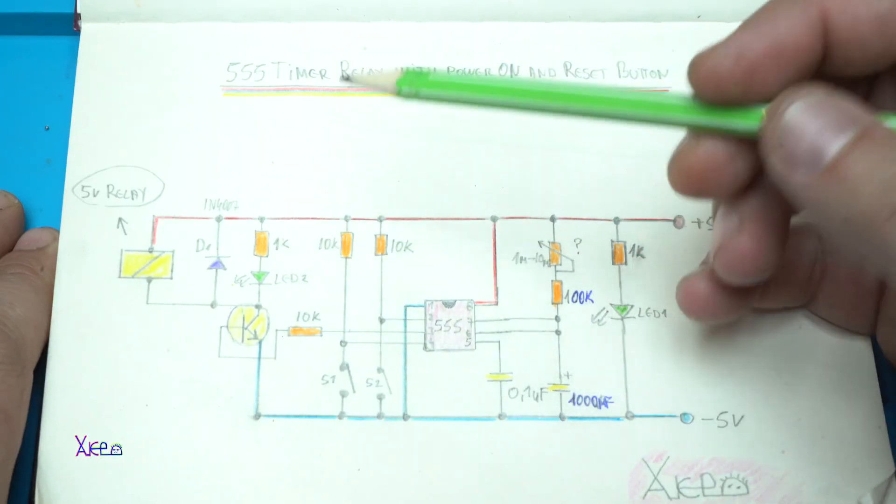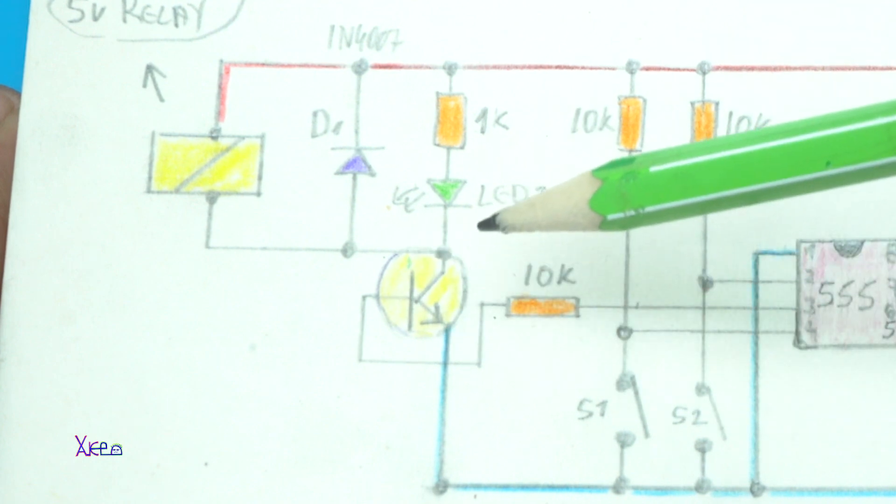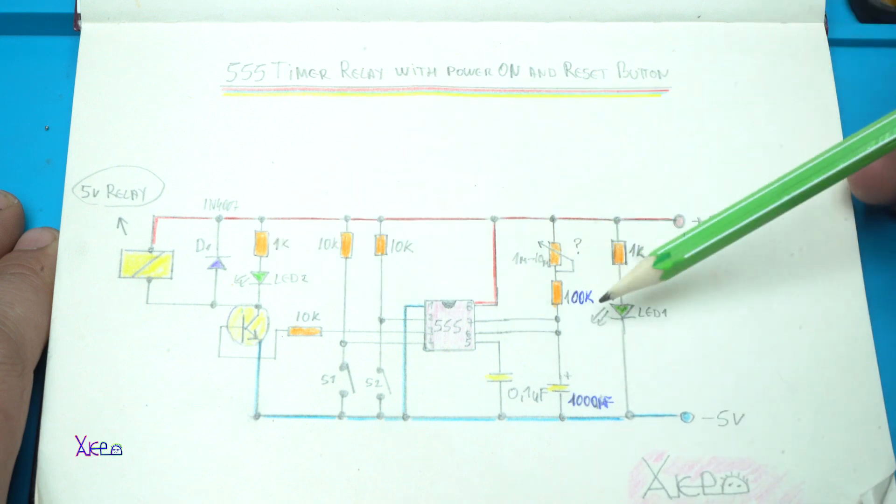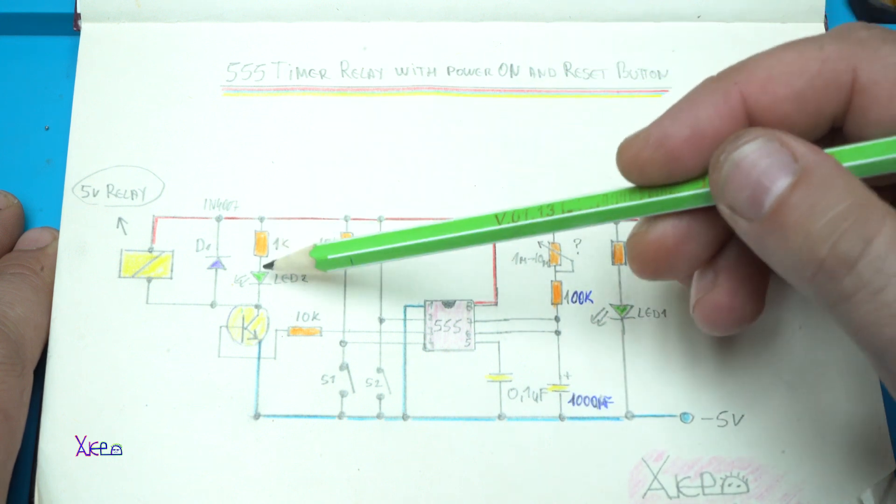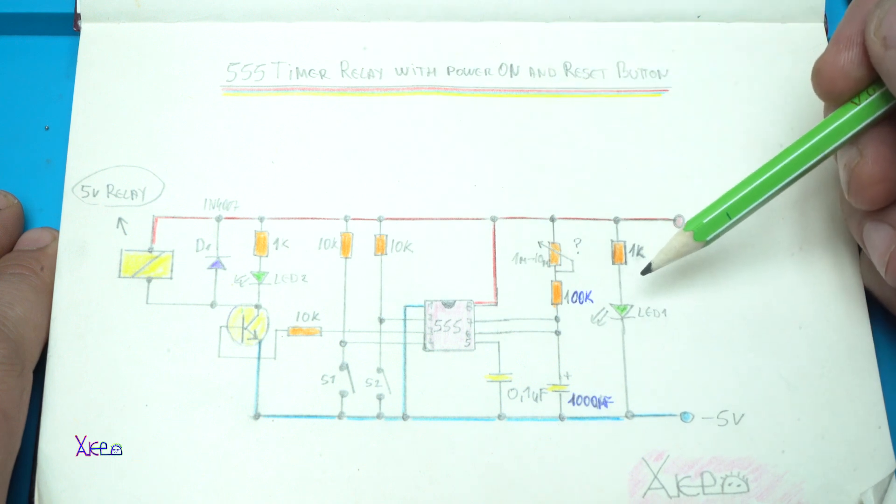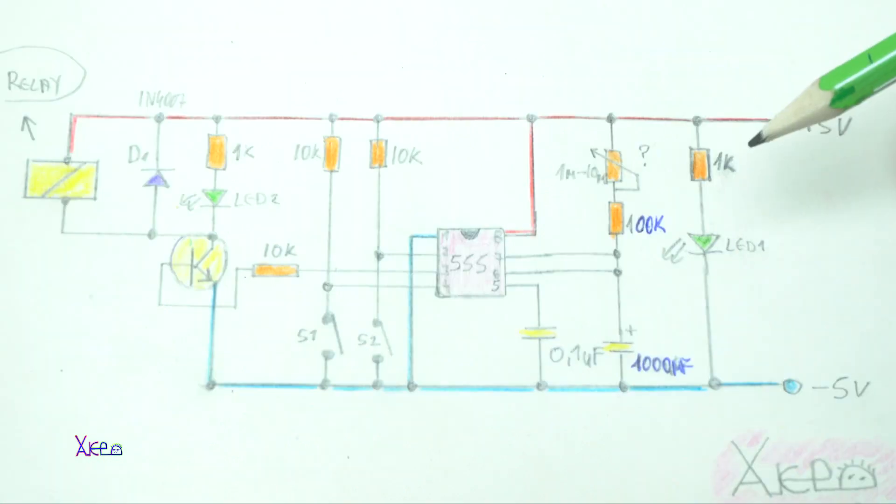You need a 5 volt relay. You are going to need an NPN transistor. In my case I am using BC547. Two LEDs. One of them will indicate when the timer is on and the second LED will indicate that the circuit is working. And that's it.